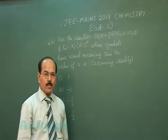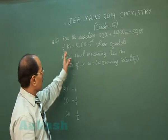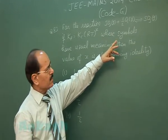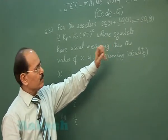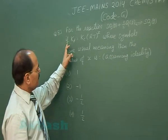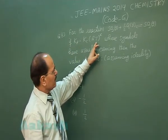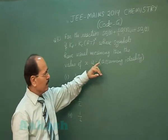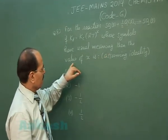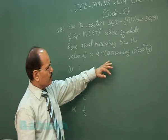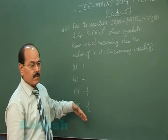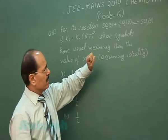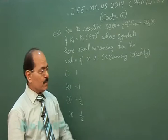Question number 83 says for the reaction SO2 gas plus half O2 gas in equilibrium with SO3 gas, if KP is equal to KC into RT raised to the power X, where symbols have usual meaning, then the value of X is, assuming ideality. Four options are given.